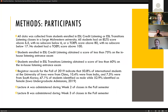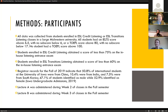Data was collected from students enrolled in the intact ESL Credit Listening or ESL Transitions Listening classes. All students had an IELTS score above 6.5 with no sub-score below 6, or a TOEFL score above 80 with no sub-score below 17, and no student had a TOEFL score above 100. The three top nationalities represented were Chinese, Indian, and South Korean, and approximately half identified as male and half as female.